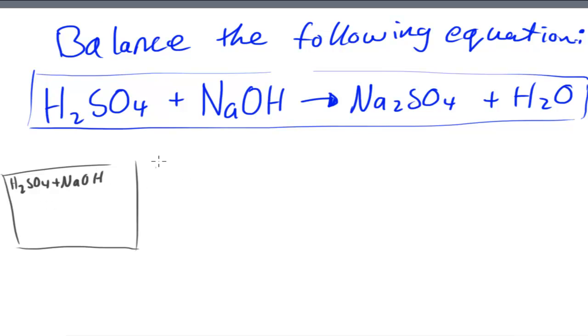NaOH and I'm going to write out the second part of the equation here Na2SO4 plus H2O. How many hydrogens have we got here? We've got one, two, three, so H is equal to three.